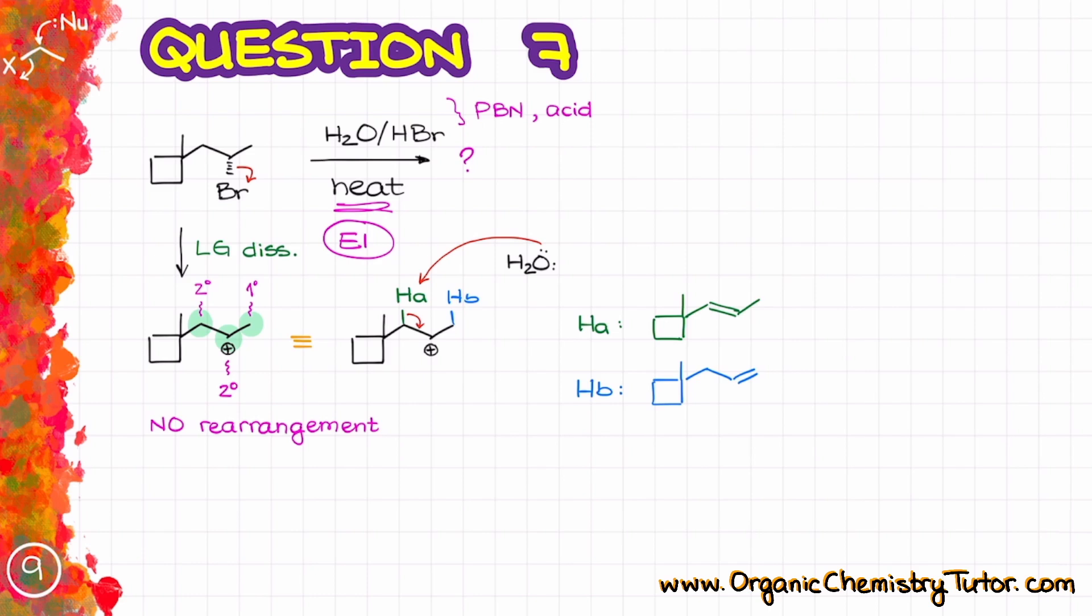So in this case we can get two possible elimination products one by eliminating the proton A and another by eliminating proton B. Since this is an E1 reaction we are going to be looking for the most substituted double bond and in the green case in the case of HA that going to give me a double bond with two substituents on it while in the blue case in the case of HB I'm going to get a double bond with only one non hydrogen substituent which means that the top molecule is going to be my major product in this reaction.